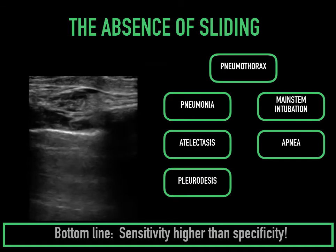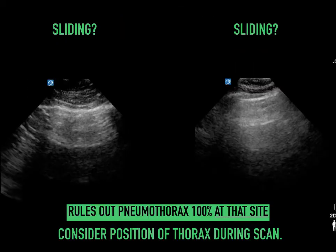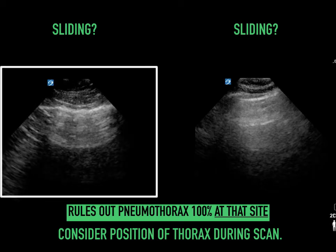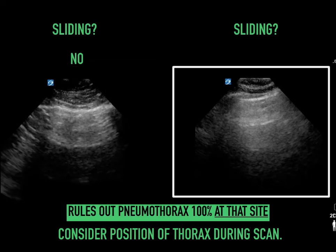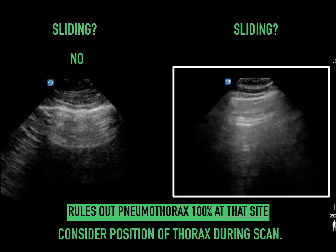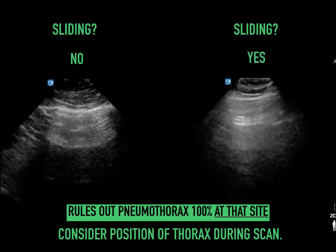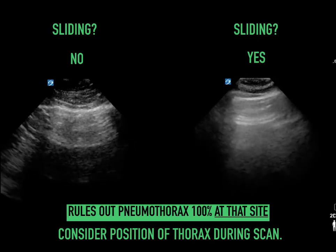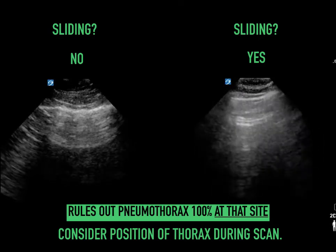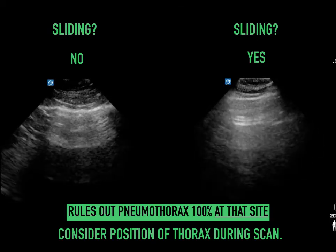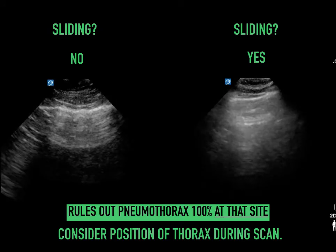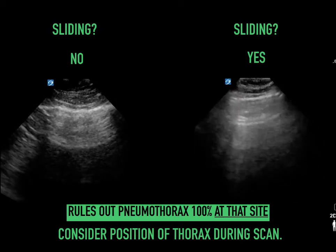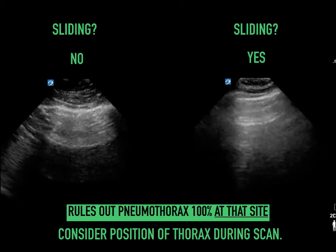We can increase the specificity by looking for several other findings. There is no sliding on the left side image — this patient had a pneumothorax and had a chest tube placed. On the right side of the image there is sliding — you see the scintillating line and occasionally a B line, which can help rule out pneumothorax at one site. When we find the absence of sliding this rules out pneumo at that site. If a patient is supine we look anteriorly as air tends to rise in the thorax; if sitting upright we look at the apex.